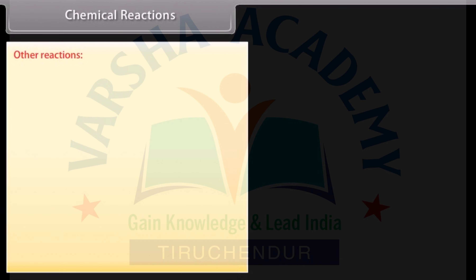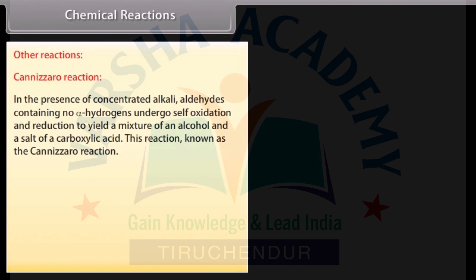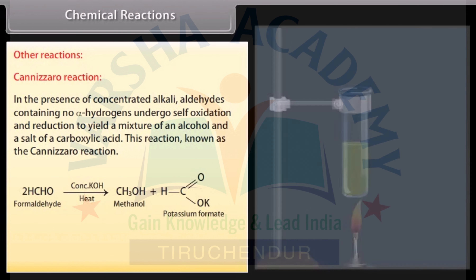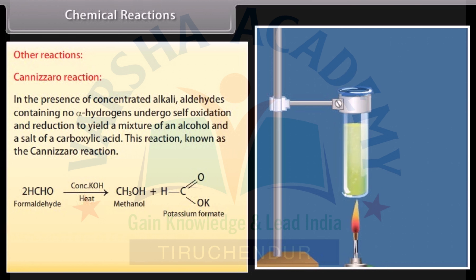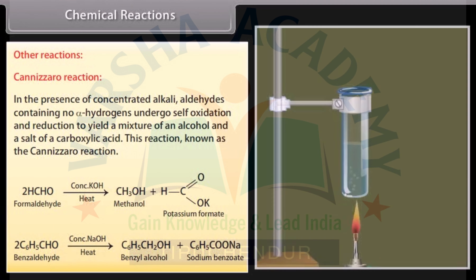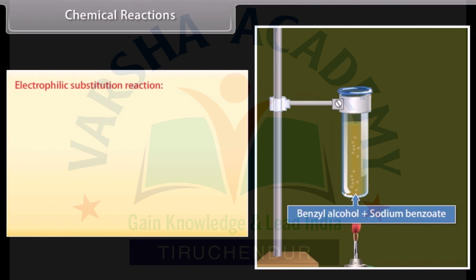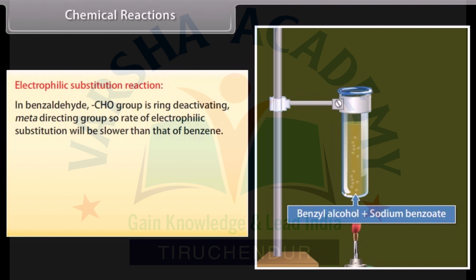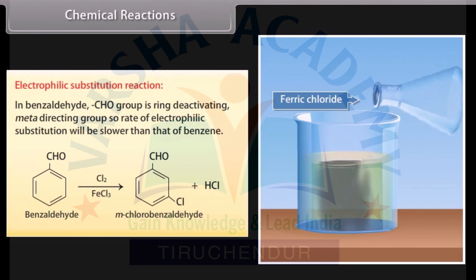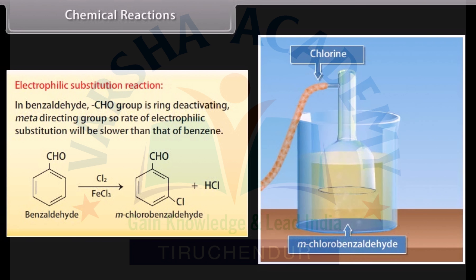Cannizzaro reaction: in the presence of concentrated alkali, aldehydes containing no alpha hydrogens undergo self-oxidation and reduction to yield a mixture of an alcohol and a salt of a carboxylic acid. This reaction is known as the Cannizzaro reaction. Formaldehyde reacts with concentrated potassium hydroxide to form methanol and potassium formate. Benzaldehyde reacts with concentrated sodium hydroxide to form benzyl alcohol and sodium benzoate. Electrophilic substitution reaction: in benzaldehyde, the aldehyde group is ring-deactivating and meta-directing, so the rate of electrophilic substitution will be slower than that of benzene. Benzaldehyde reacts with chlorine and ferric chloride solution to form meta-chlorobenzaldehyde and hydrochloric acid.